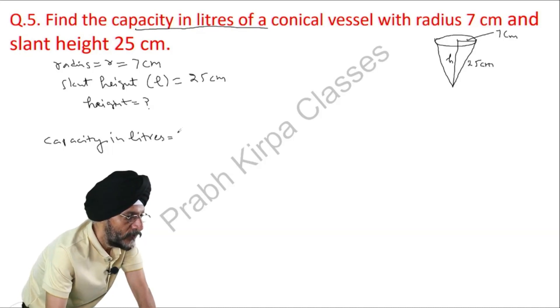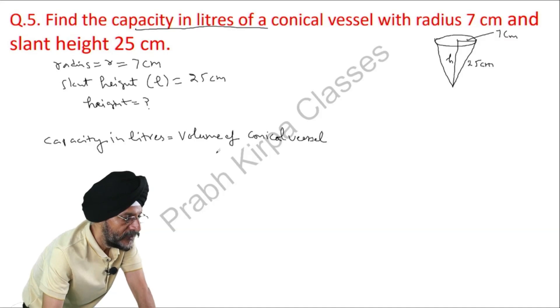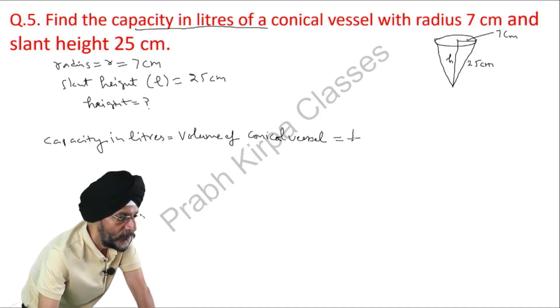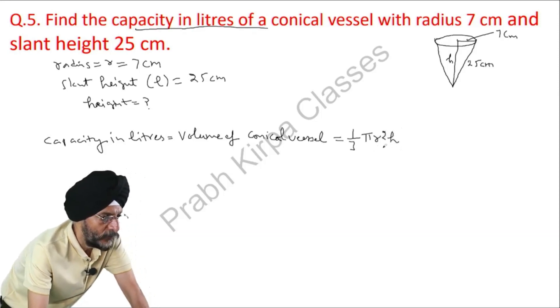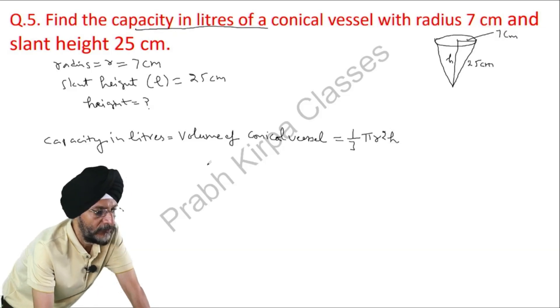Capacity in liters equals volume of the conical vessel. What is the volume of the conical vessel? It is equal to 1 over 3 pi r square h. So, we will have to first find out the value of h so that we can arrive at the volume of the conical vessel.